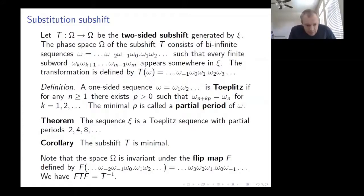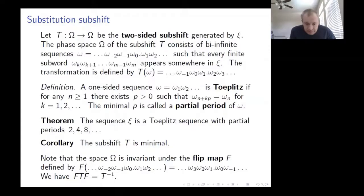Because xi is obtained as a limit of palindromic words, the space Omega is invariant under the flip map — we can flip plus infinity with minus infinity, flipping with respect to the decimal point. After the flip, the new bi-infinite sequence will also be in Omega. When you conjugate the shift by the flip map, you get the inverse shift — a left shift becomes a right shift.